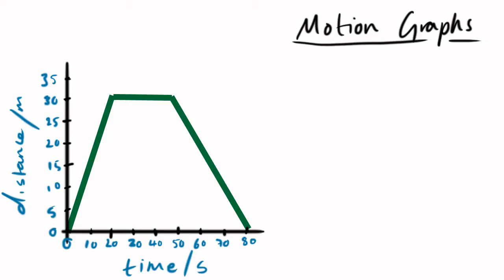This is a distance time graph and the other type of graph is a velocity time graph. So what do the various sections of a distance time graph represent? Well this first section, the upward sloping part, is a constant velocity. So during that period of time this object is increasing in distance at a constant rate, so constant velocity.